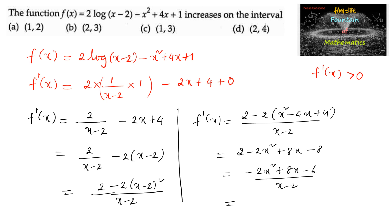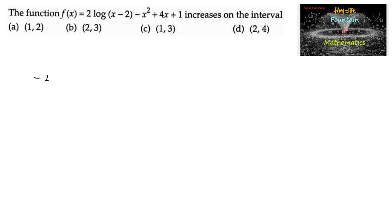We can write this as (minus 2x squared plus 8x minus 6) divided by (x minus 2). Taking out minus 2 common gives (x squared minus 4x plus 3) upon (x minus 2). On factorization, f'(x) equals minus 2 times (x minus 1)(x minus 3) upon (x minus 2). This is f'(x).